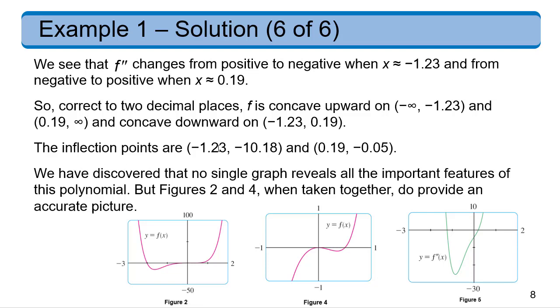We can find the inflection points where it changes from concavity to concavity as negative 1.23, and then just plug it into the original function to find the y value. And then the 0.19, again, plug it in to find the y value.